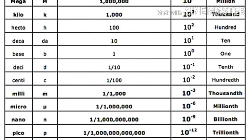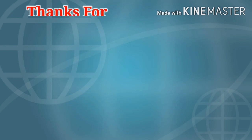Hecto means 100, deca means 10, deci means 1/10, centi means 1/100, milli means 1/1000, micro means 1 by 10 to the power 6 (that is one-millionth), and nano means 1 by 10 to the power 9. This is all about the use of large and small numbers in our daily life. Thanks for watching.